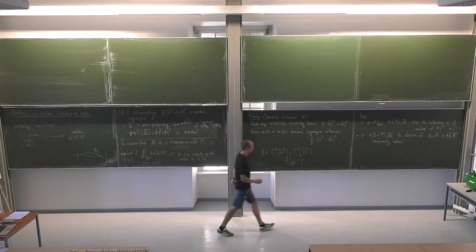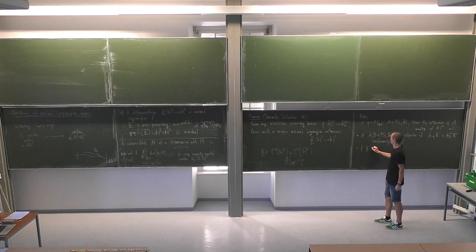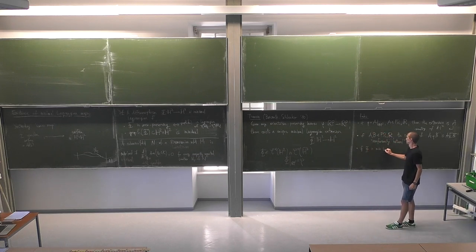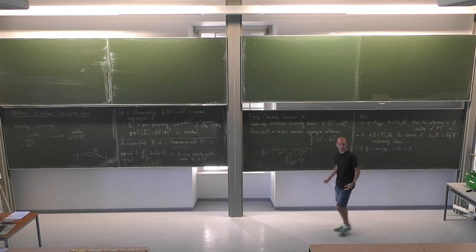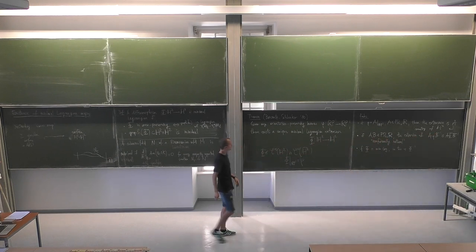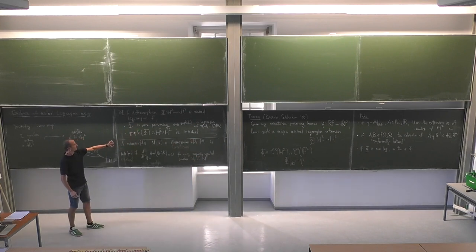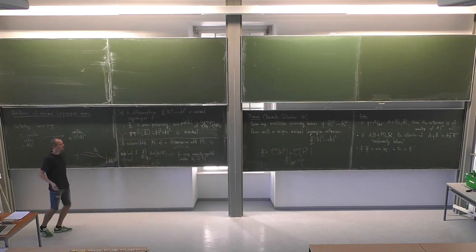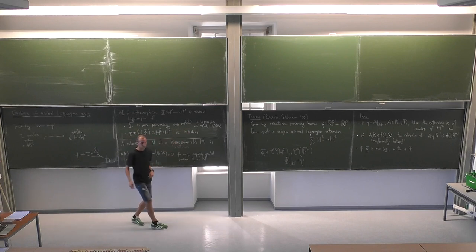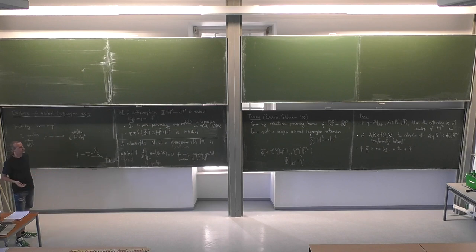A final small remark: if Phi is minimal Lagrangian, then so is Phi⁻¹. The inverse of a minimal Lagrangian map is minimal Lagrangian. This is easy to see from the definition, because the graph of the inverse is the same as exchanging the two factors, and this preserves the symplectic form by isometries.